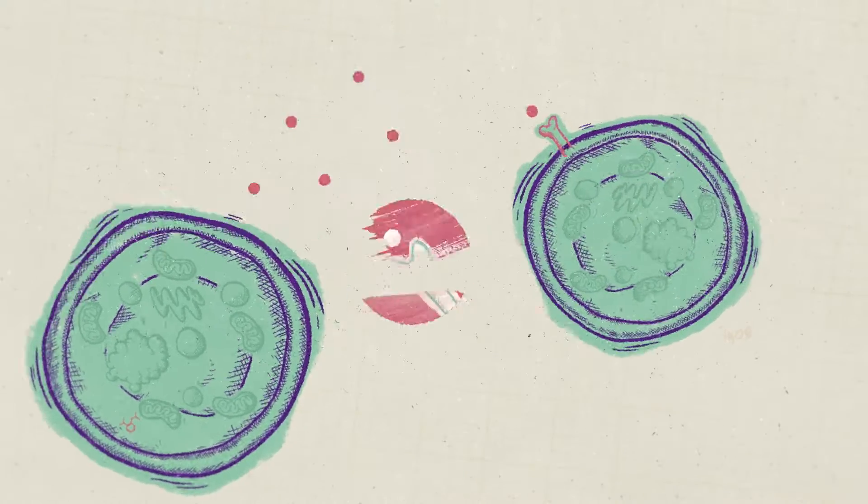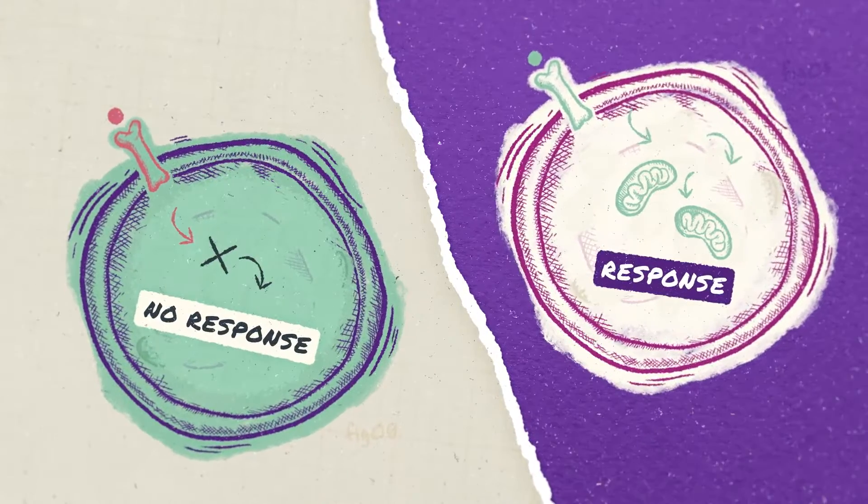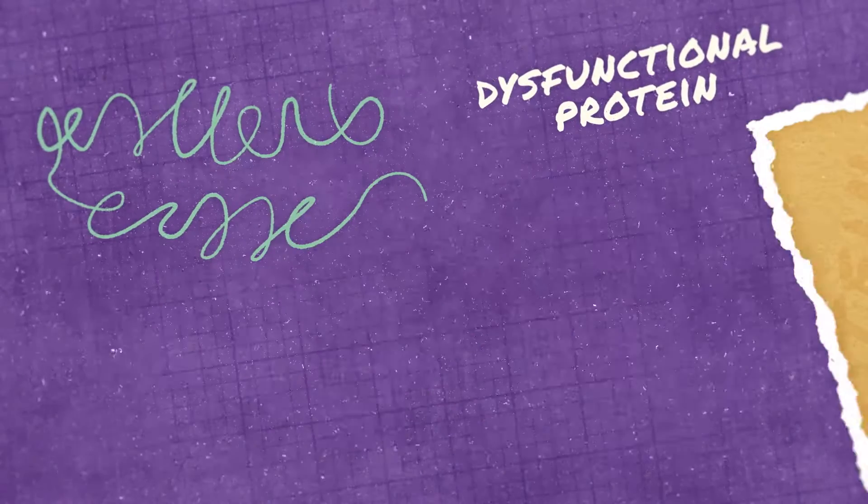These processes may include cell signaling, inhibiting or triggering certain functions, and changing the shape of proteins.